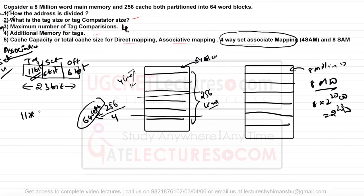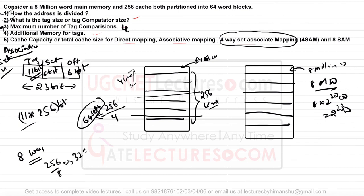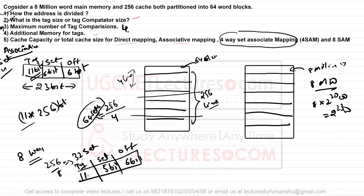Additional memory for tags in four-way set associative = 11 bits × 256 lines. For eight-way set associative mapping, 256 lines ÷ 8 = 32 sets, requiring 5 bits for set number and 6 bits for offset, leaving 23 − 5 − 6 = 12 bits for the tag. In the worst case, 8 tag comparisons are required. This covers all the questions for each mapping type.